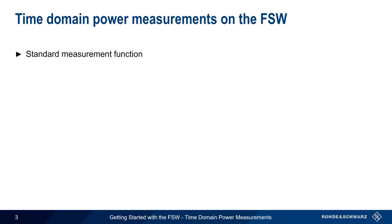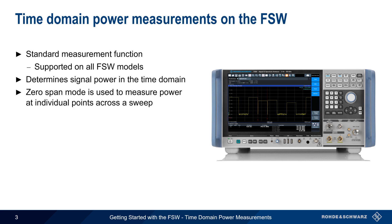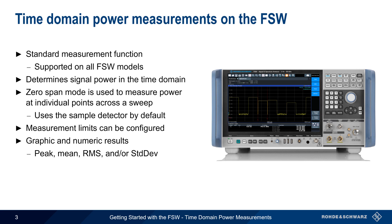Time domain power is one of the standard spectrum measurements on the FSW, and is supported on all FSW Series Analyzers. As the name implies, this measurement is used to determine signal power in the time domain, as opposed to the much more common power versus frequency measurements typically made with spectrum analyzers. Since this is a time domain measurement, the FSW uses zero span mode to measure power at individual points across a sweep. By default, this power is measured using the sample detector. Measurements can be made over the entire sweep or only over a limited part of the sweep. The power results are displayed both graphically and numerically, and can be given as peak power, mean power, and/or RMS power, along with the standard deviation.